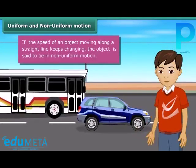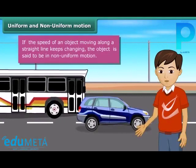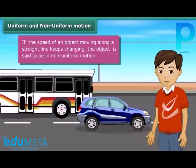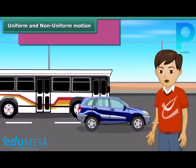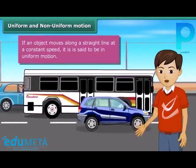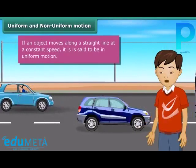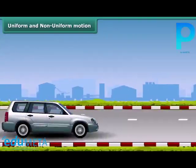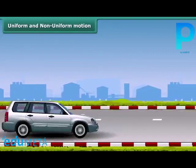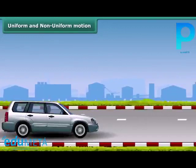A bus, for example, moves at varying speeds over varying stretches on its long route. Hence its motion is non-uniform. If an object moves along a straight line at a constant speed, then it is said to be in uniform motion. A car, for example, may maintain the same speed when it covers a short distance.